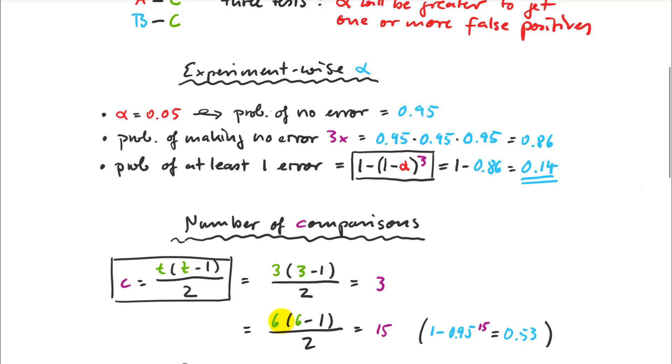Now if I plug in six treatment levels - A, B, C, D, E, F - the number of comparisons skyrocket very quickly. 6 times 5 is 30 divided by 2 is 15. If I plug this into my formula, 1 minus 0.95 to the power of 15, I get more than 50% chance that I have one or more false positives. That's not good. If I were to do this without any adjustments to my alpha level, I'd be wrong more than half of the time.